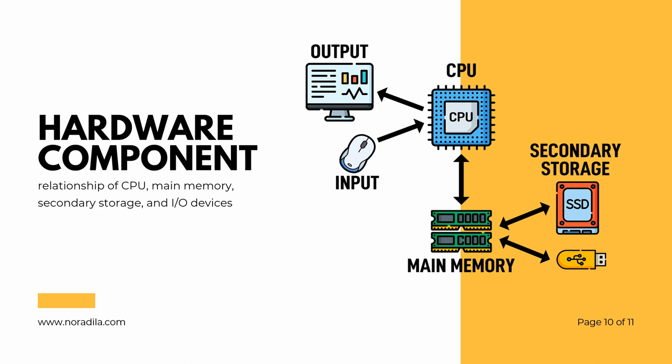How do the hardware components work? This figure shows the relationship of the CPU, main memory, secondary storage, and input/output devices. The CPU is the chip that executes program commands. Main memory or RAM is the primary storage area for programs and data that are in active use. The CPU and RAM interact in both directions to execute instructions.